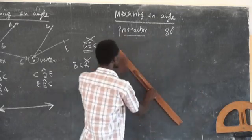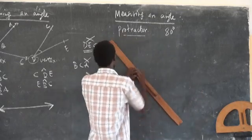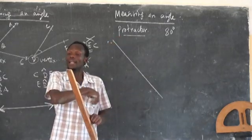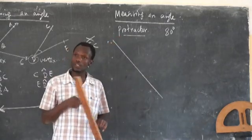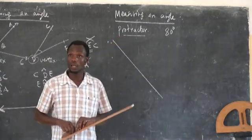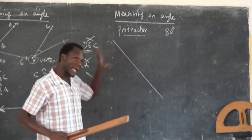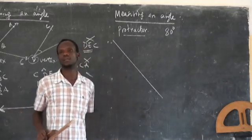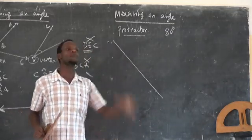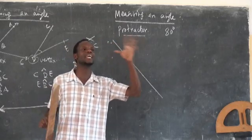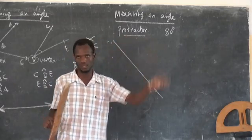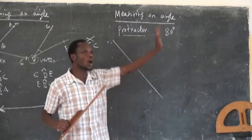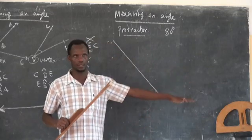Let me decide to choose this one — this is my straight line. First of all, you draw the straight line in whatever direction you need, whether this way, or this way, or this way.